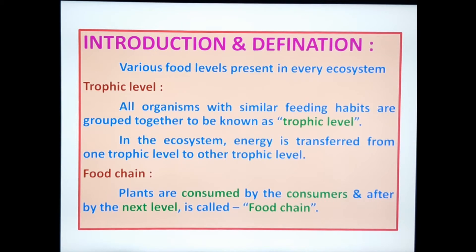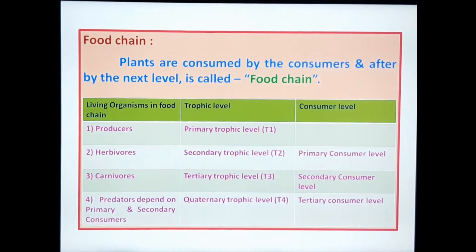Plants are consumed by consumers — nothing but herbivores, carnivores, omnivores, and top carnivores — and after by the next level, this is called a food chain. In the food chain, we observe different types of organisms at different trophic levels and consumer levels.